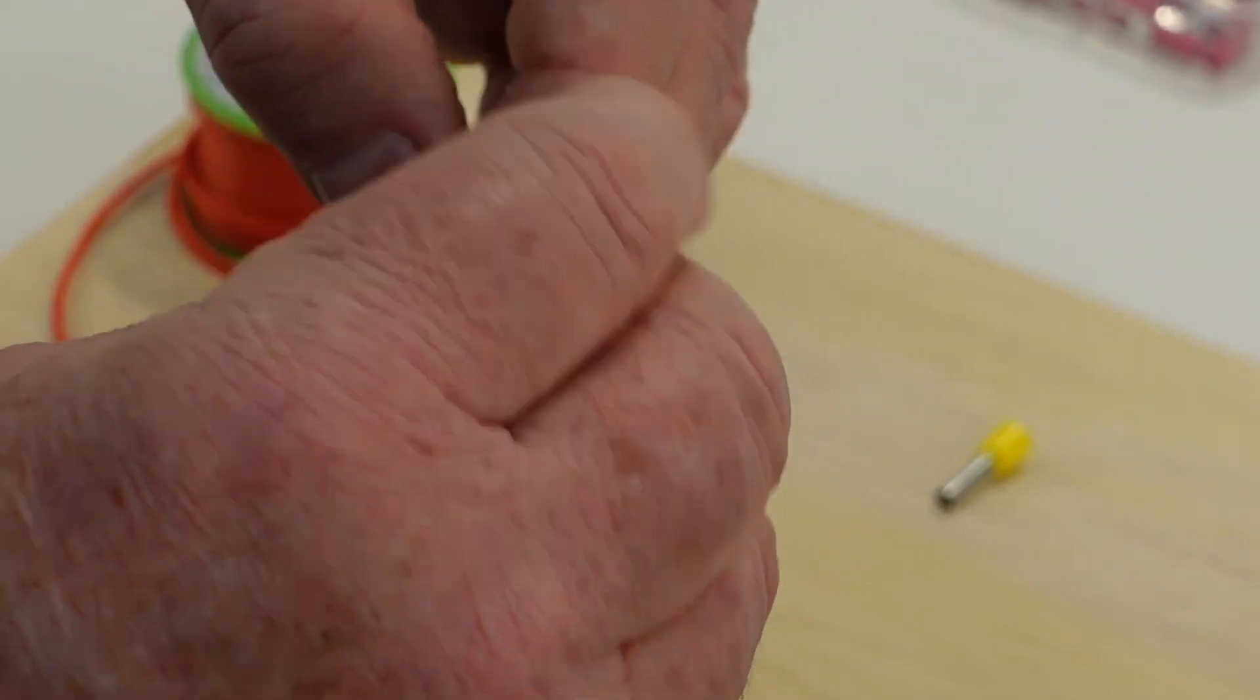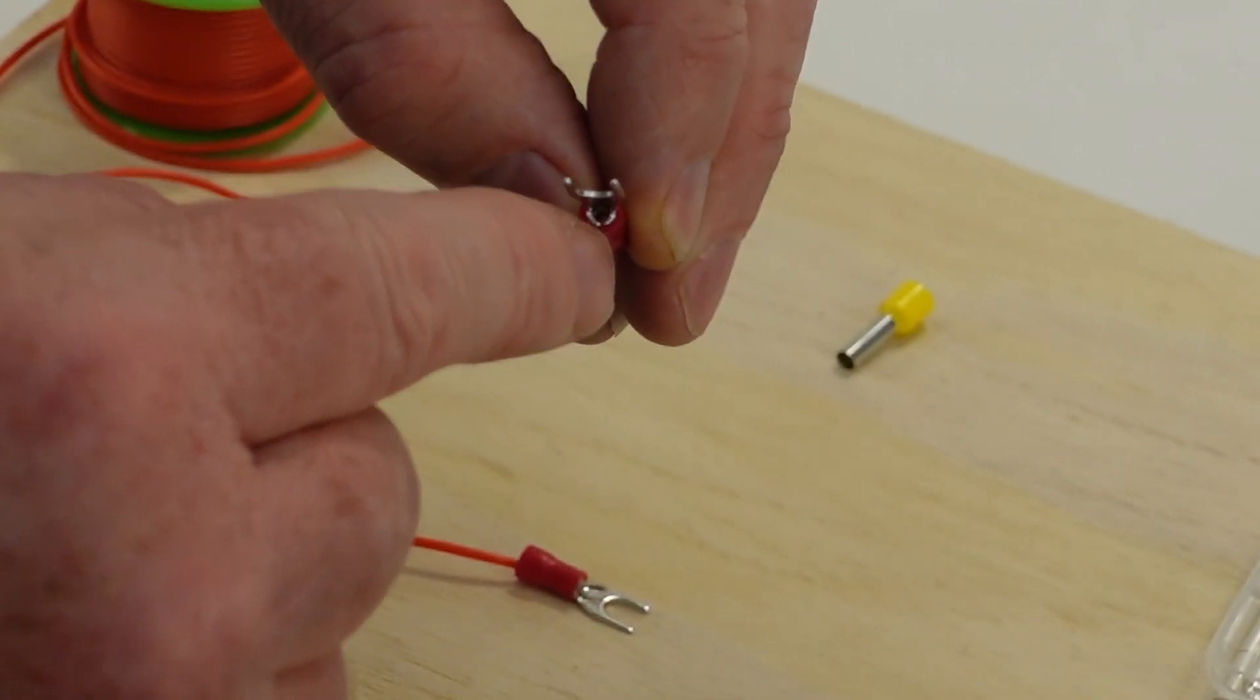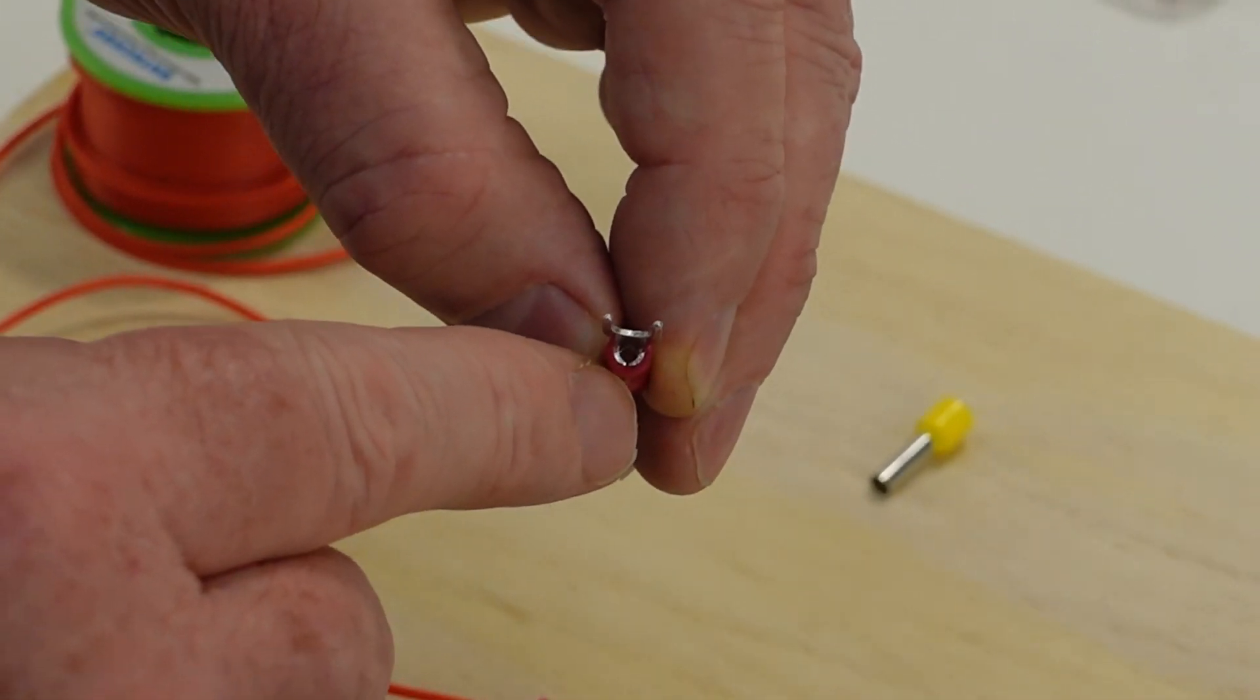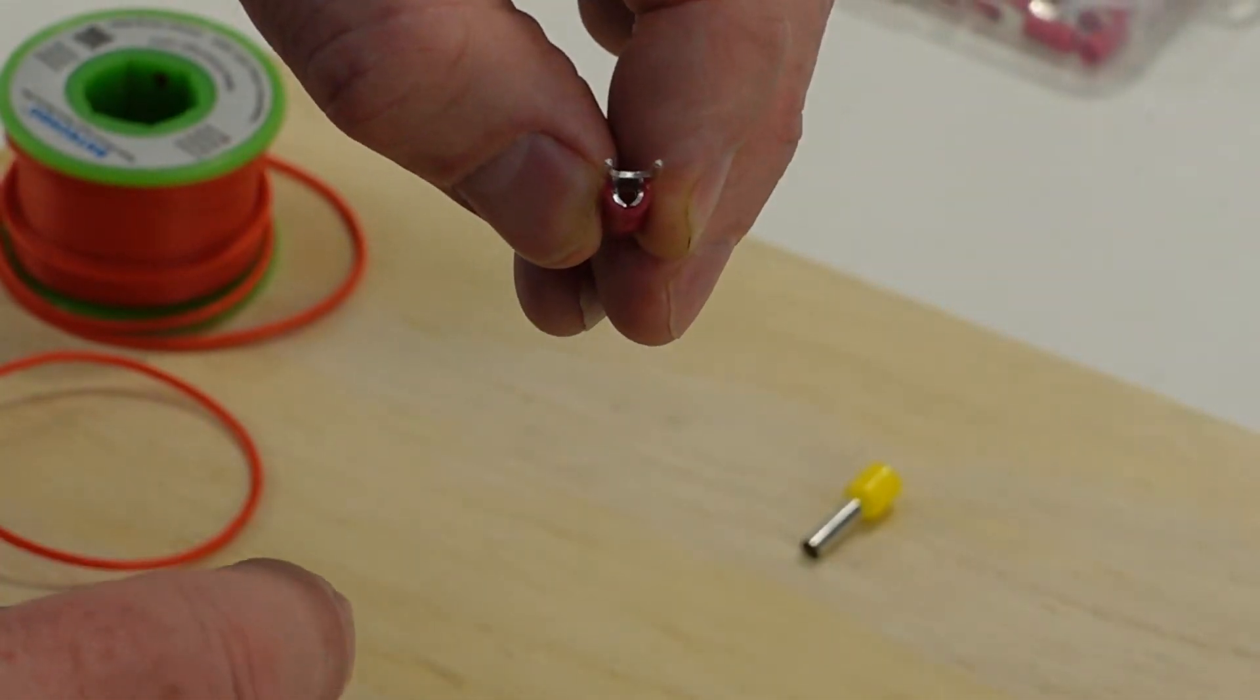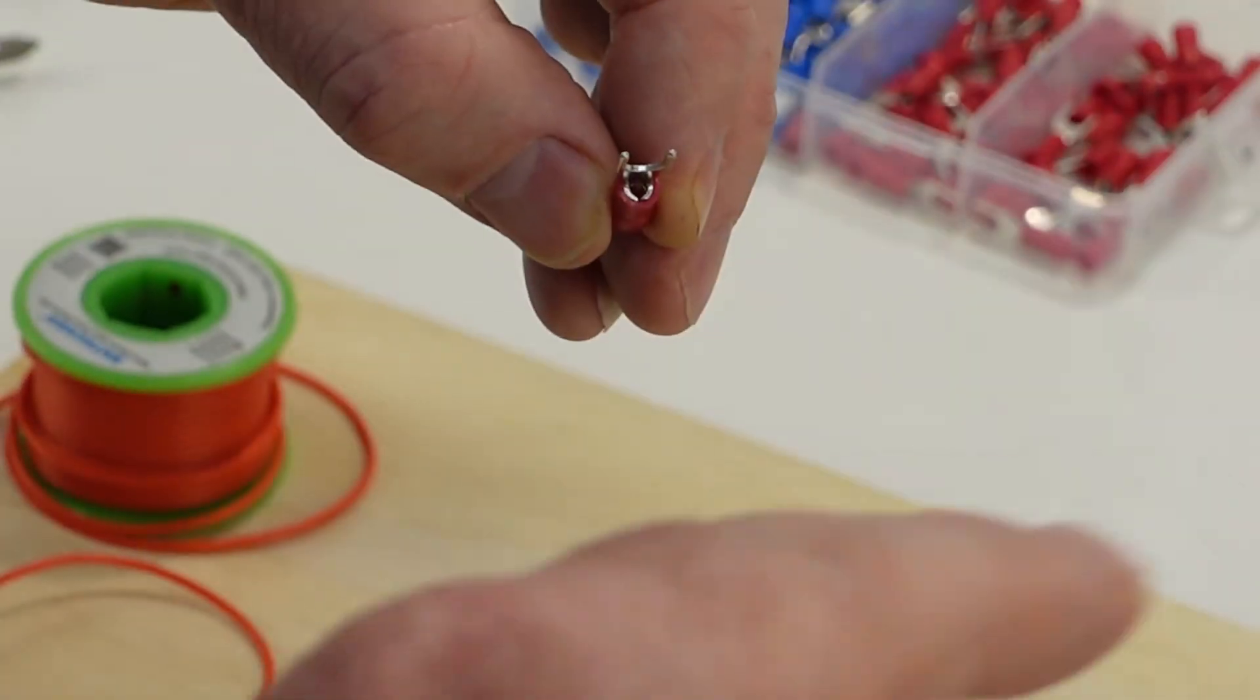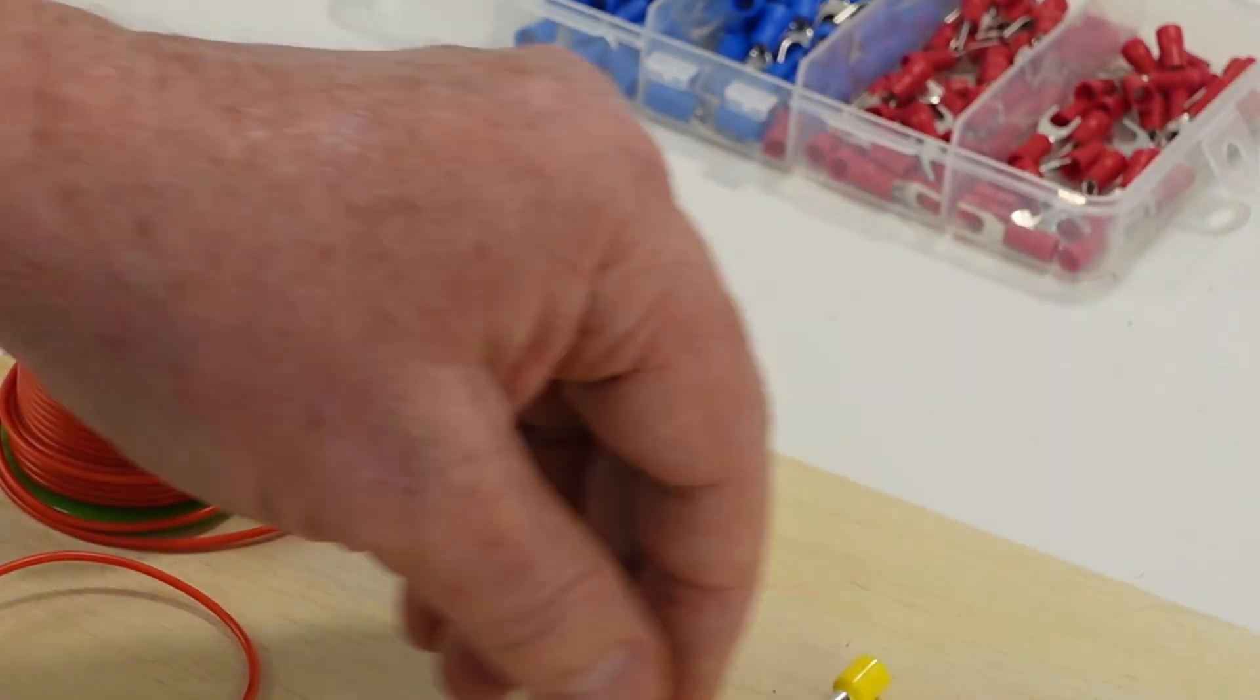And then the other thing here about these connectors is that there's a little seam on the barrel of the connector. By barrel, I mean that's the cylindrical part. And when you crimp these on your crimpers, you want to make sure that that seam is in the U of the crimper. And I'll show you what I mean by that.